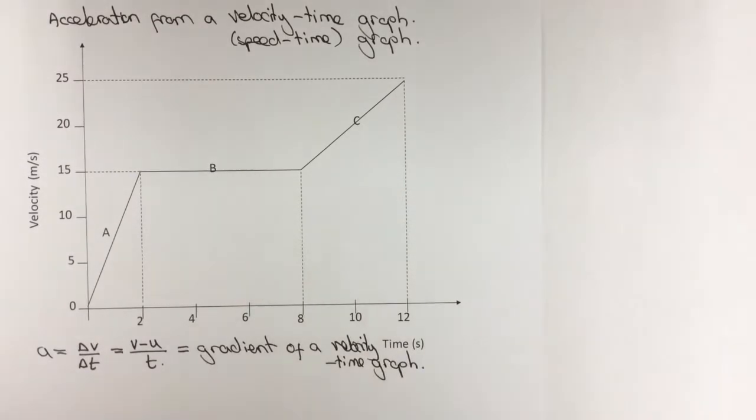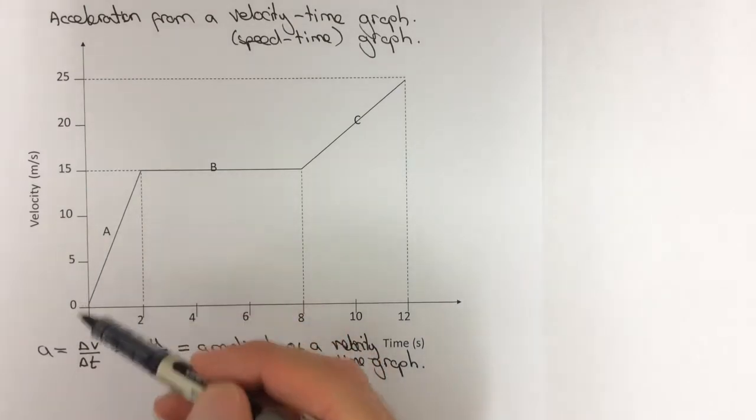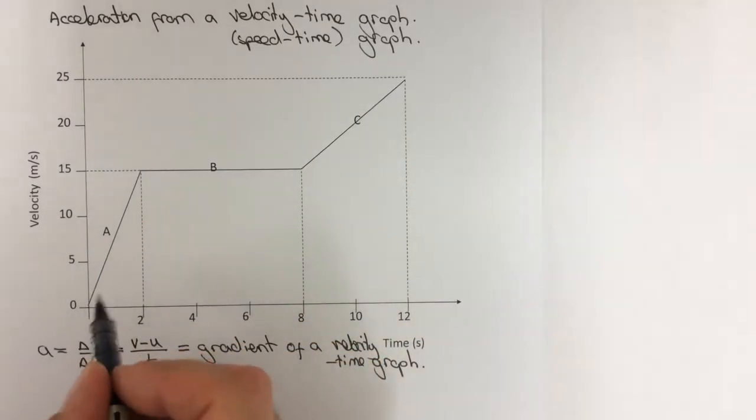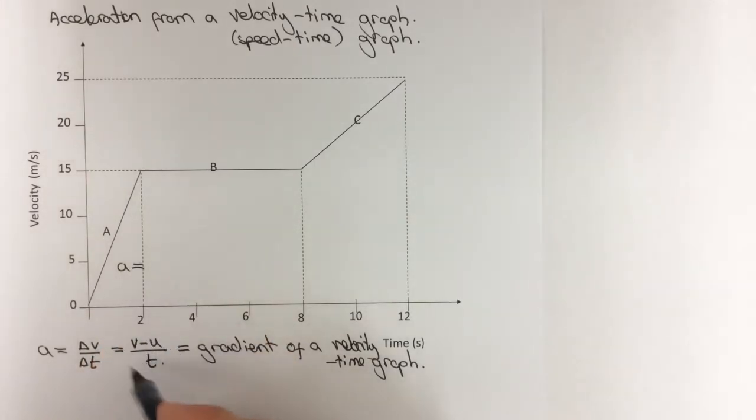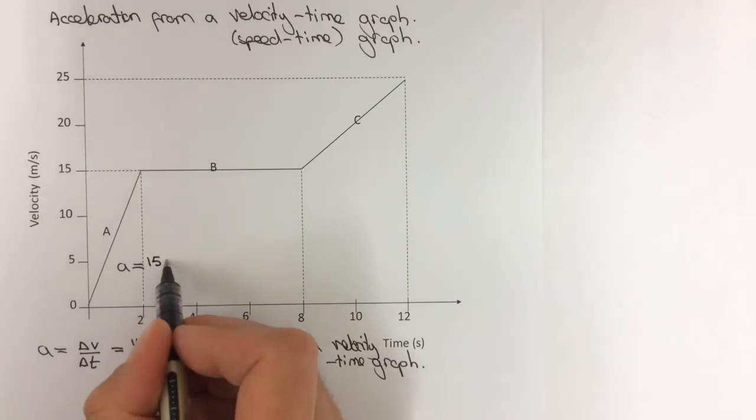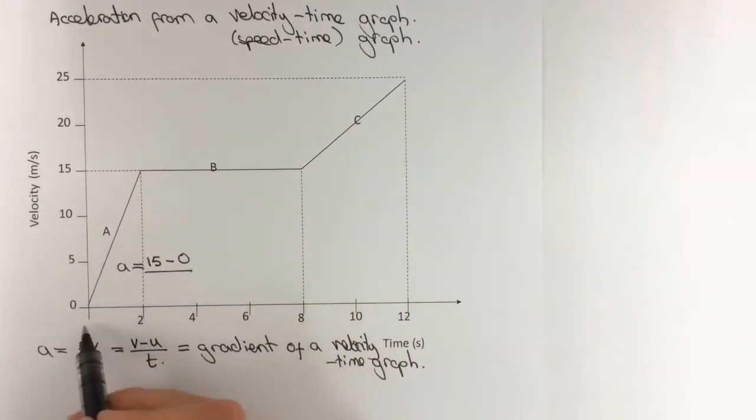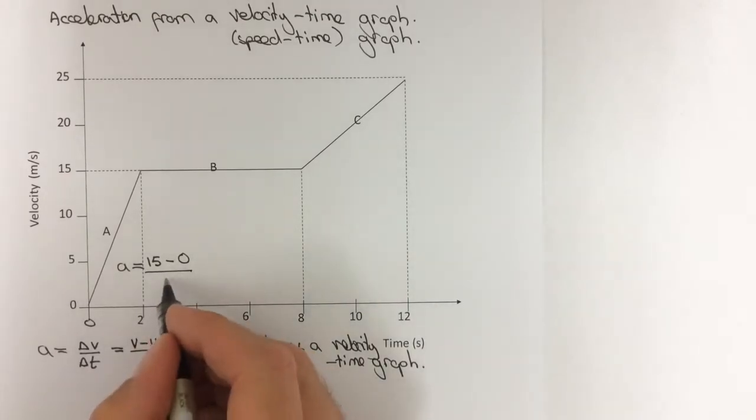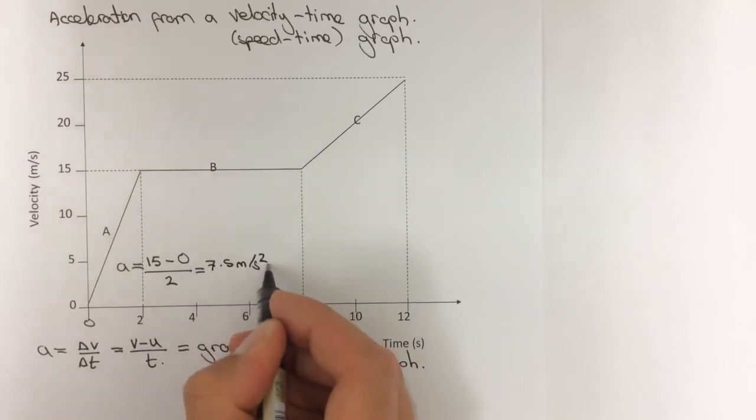So let's look at an example from this graph. If I wanted to find the acceleration in section A, then I could use this equation. My final speed is 15, my starting speed is 0, and the time taken 0 to 2 gives me 2, which would give me 7.5 meters per second squared.